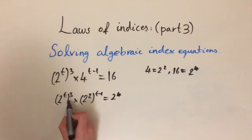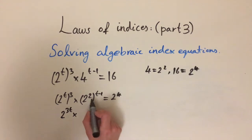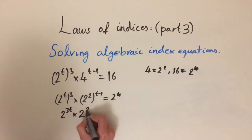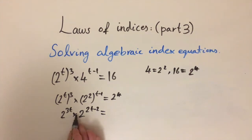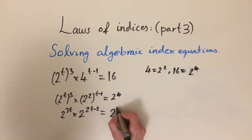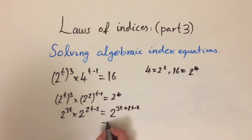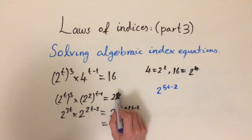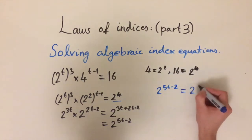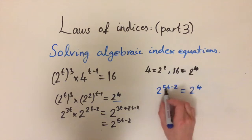Substituting in, we get: 2t cubed, times 2 squared raised to the power of (t minus 1), equals 2 to the 4. Using the multiplication law: t times 3 gives 2 to the 3t, and 2 times (t minus 1) gives 2 to the (2t minus 2). Using the addition law for multiplication, we add the indices: 3t plus 2t minus 2, which simplifies to 2 to the power of (5t minus 2). The right-hand side is 2 to the power of 4. Both sides have base 2, so we equate the exponents.